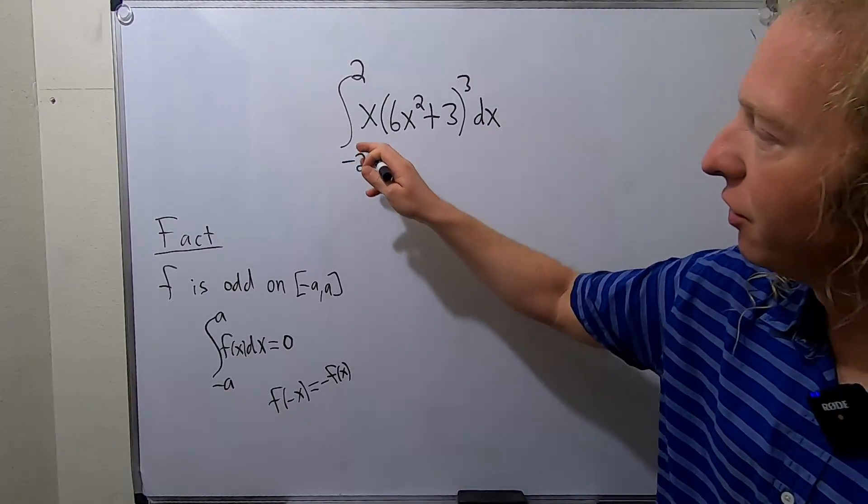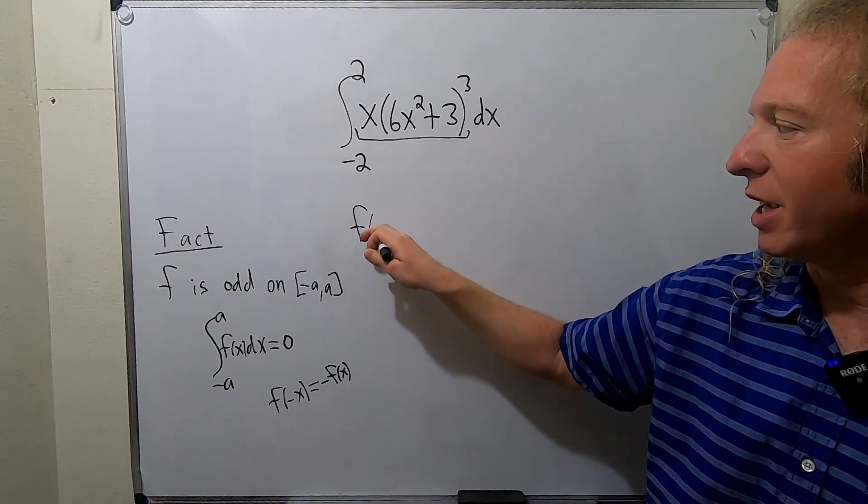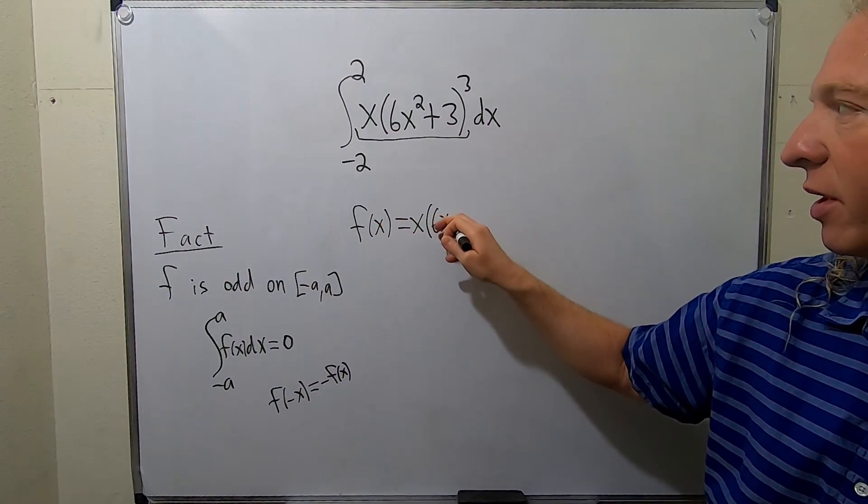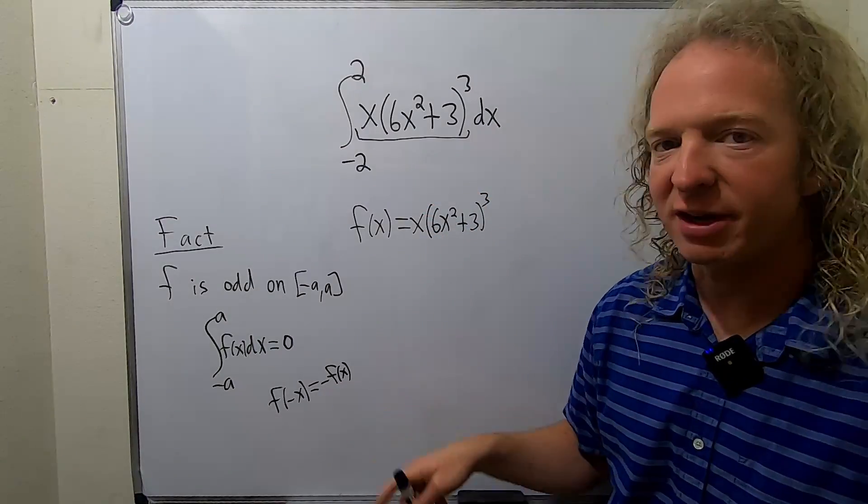So in this example here, this is your f of x. So if you were to write it down, f of x equals x parentheses 6x squared plus 3 cubed, you could actually check the definition.